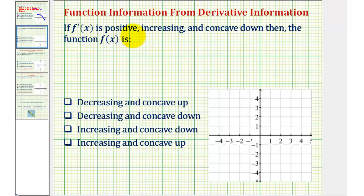If f prime of x is positive, increasing, and concave down, then the function f of x is one of the following: decreasing and concave up, decreasing and concave down, increasing and concave down, or increasing and concave up.